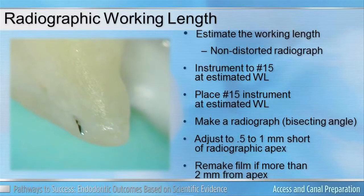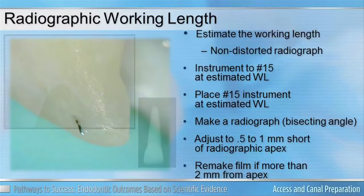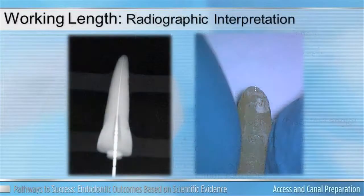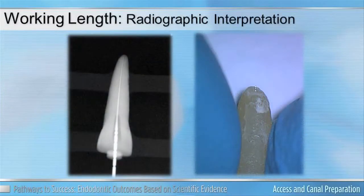The reason for this is the portal of exit does not always come out at the exact endpoint of the root. That's why it's important for us to implement the use of things like an apex locator. We also have to remember, if our file does go past that reference point, we don't want to just pull it back inside the tooth.